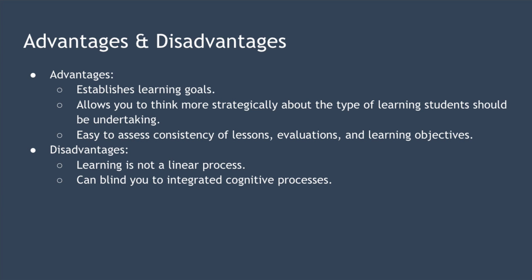There are several advantages and disadvantages associated with Bloom's taxonomy. In terms of advantages: it establishes learning goals to be achieved by both teacher and student; by classifying learning, it allows you to think more strategically about the type of learning students should be undertaking; and it makes it easy to assess if your lessons and evaluations are consistent with your learning objectives. In terms of disadvantages: the taxonomy provides a false representation of learning, as learning is not a linear process whereby each level is separate from all others; and the model can blind you to the integrated cognitive processes taking place in a person's brain as they learn.